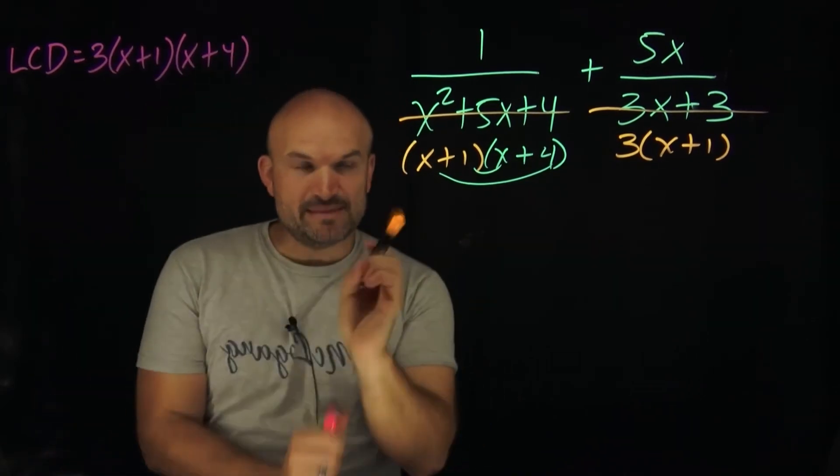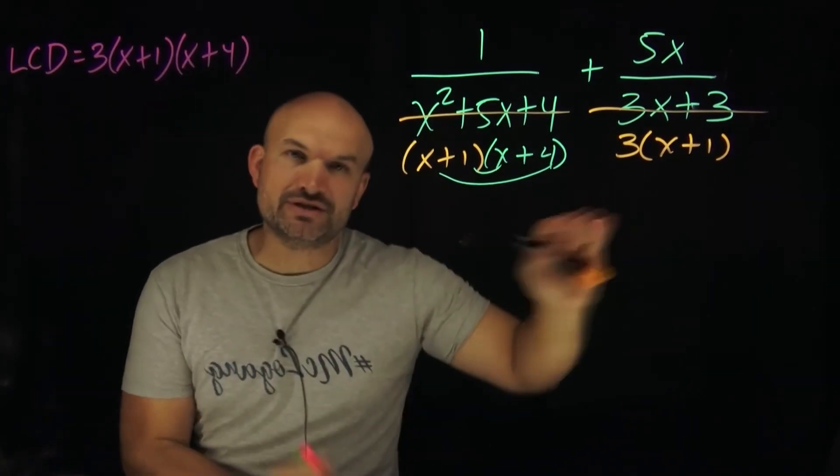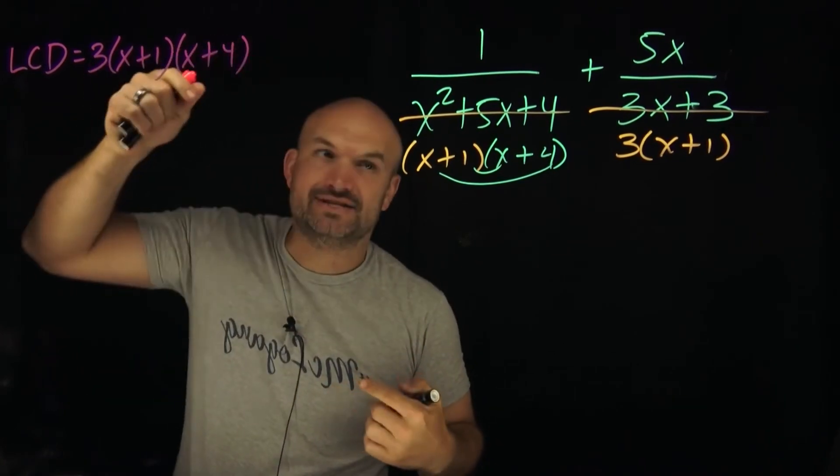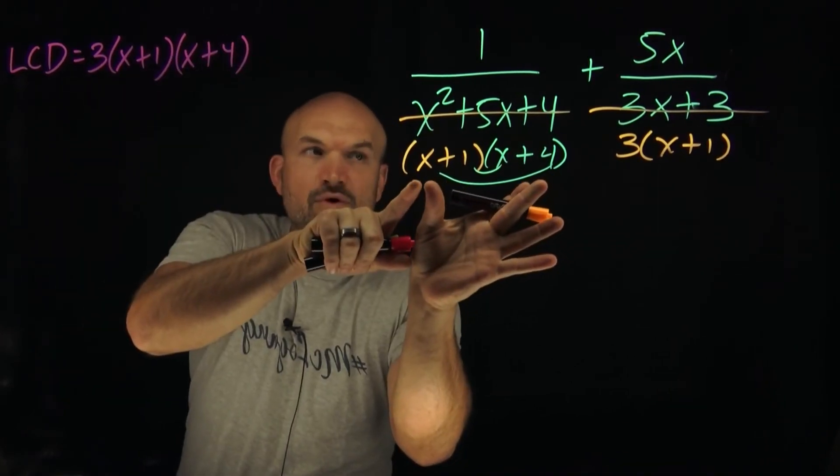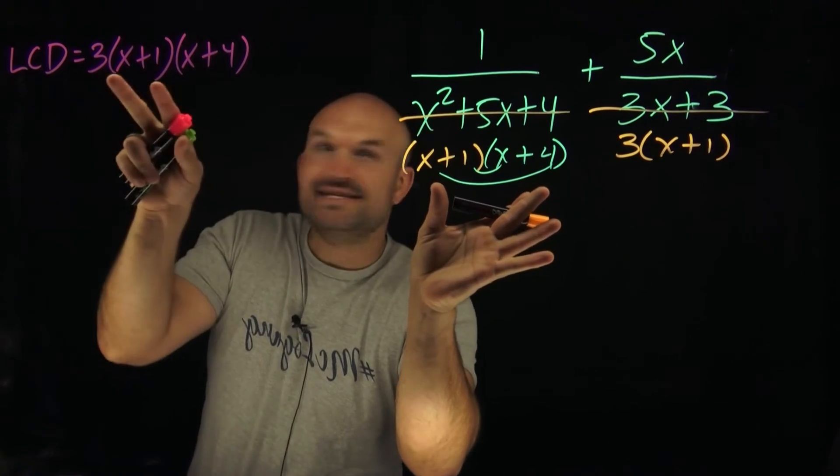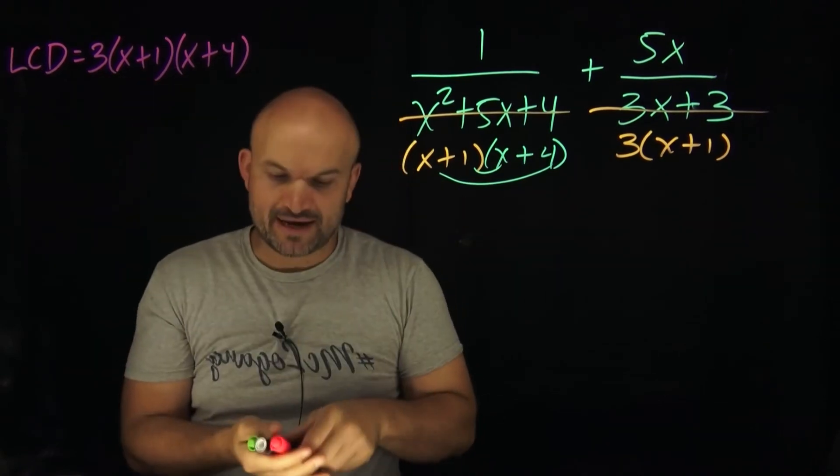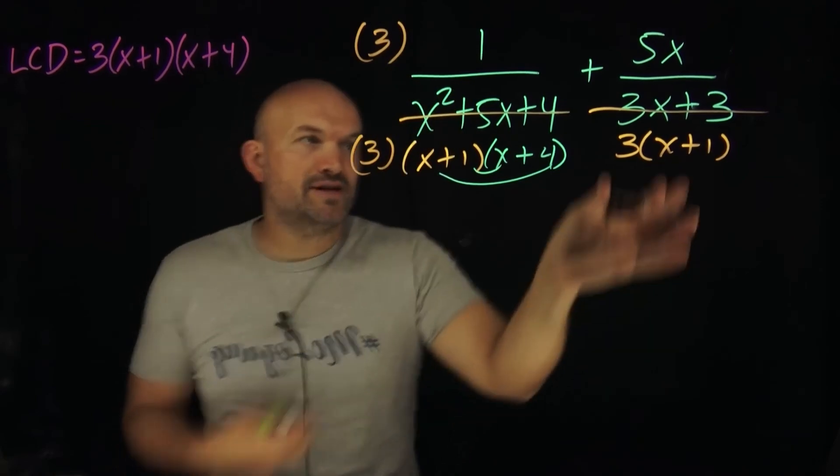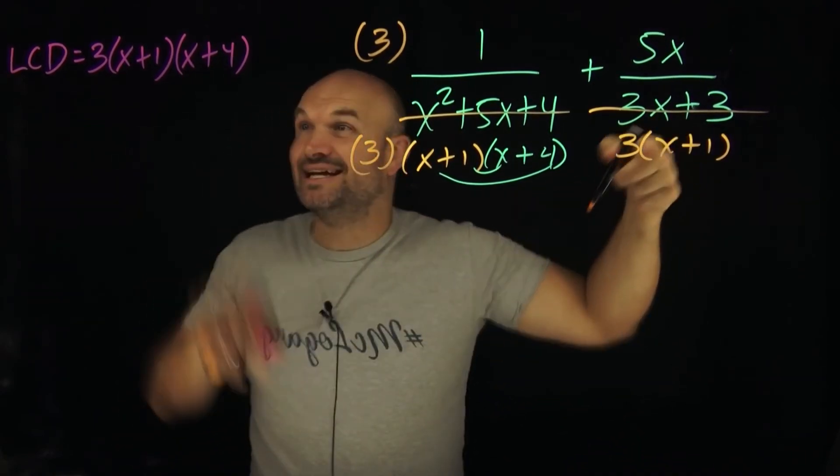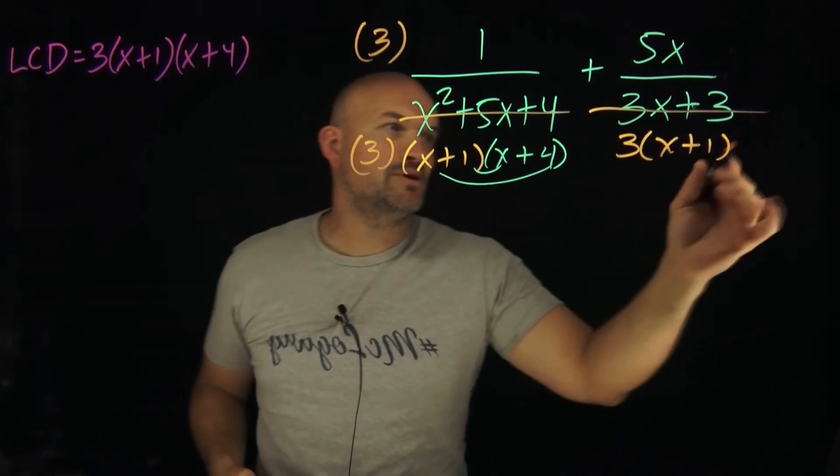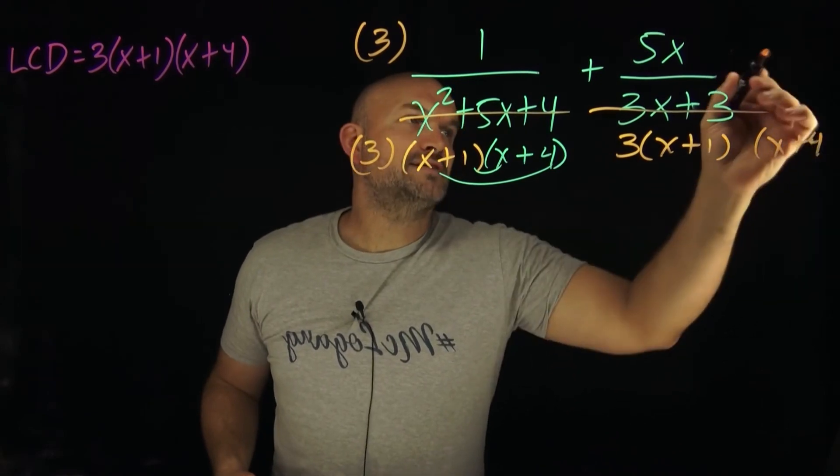The important thing about the LCD is everything in your denominator has to evenly divide into that LCD. Over here, I have (x+4) and (x+1). I just need a 3. So I'm going to multiply by 3 on the top and bottom. And over here, I have 3 and (x+1). The only thing I need is (x+4), so I'm going to multiply by (x+4) on the top and bottom.